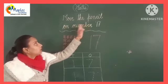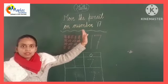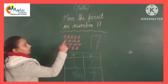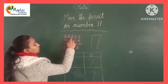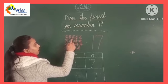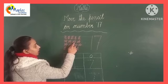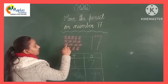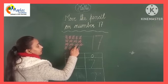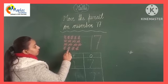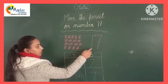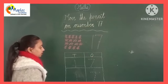Move the puzzle on number 17. Now count: 1, 2, 3, 4, 5, 6, 7, 8, 9, 10, 11, 12, 13, 14, 15, 16, 17. Number 17.